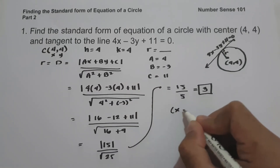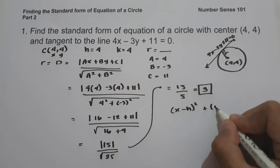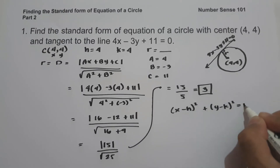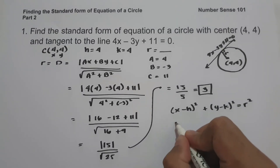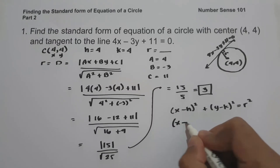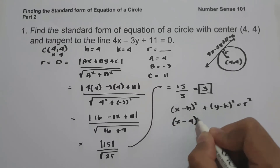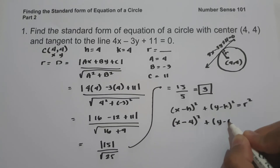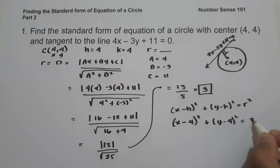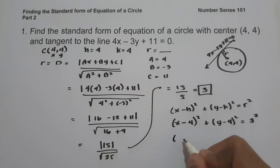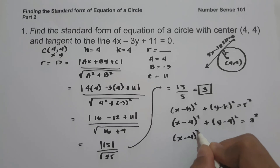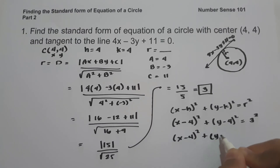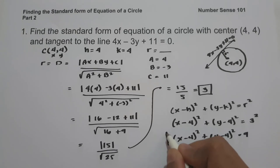To find the standard form of the equation of a circle, we use: (x minus h)² plus (y minus k)² equals r². Substituting h equals 4, k equals 4, and r equals 3: quantity x minus 4 squared plus quantity y minus 4 squared equals 3 squared, which is 9. And this will be our answer.